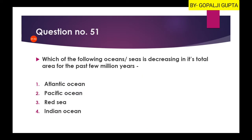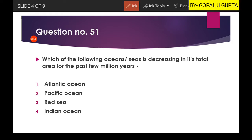Next question: 'Which of the following oceans or seas is decreasing in its total area for the past few million years?' There are different seas and oceans — some are expanding, some are decreasing. For example, the Tethys Ocean is now the Himalayan mountains. Regarding decreasing oceans, the Pacific Ocean is decreasing from the past few million years, so option two is our right answer.